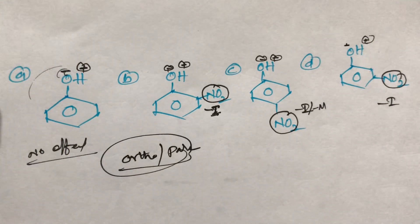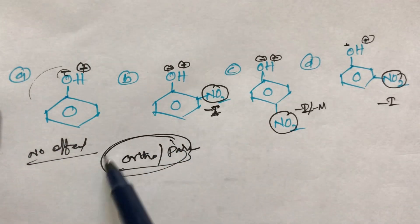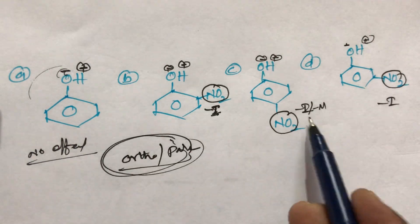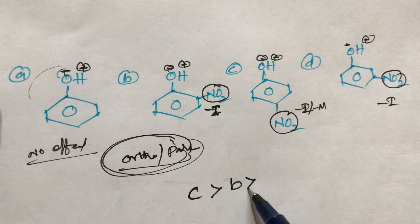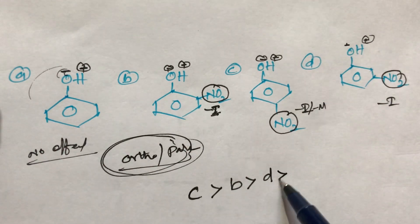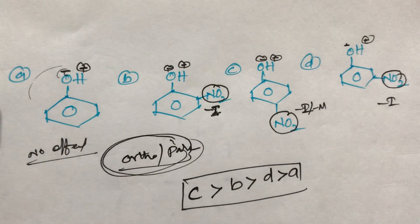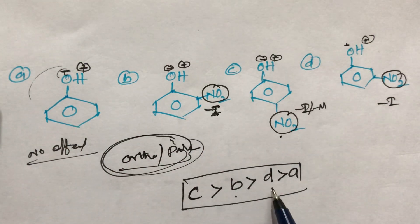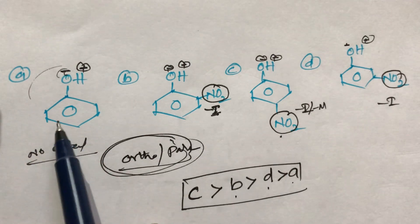Out of these four, which one is more acidic? Since phenols are generally ortho-para directors, the order is: compound c (para-nitrophenol) is more acidic than compound b (ortho-nitrophenol), compound b is more acidic than compound d (meta-nitrophenol), and compound d is more acidic than compound a (phenol). This is the order of acidic nature from highest to lowest.